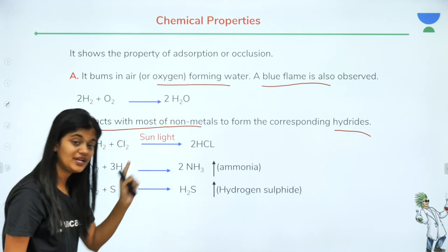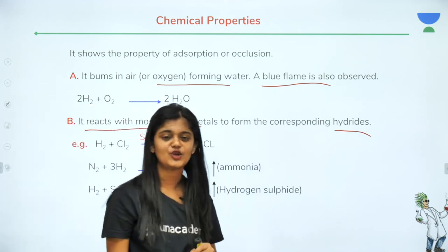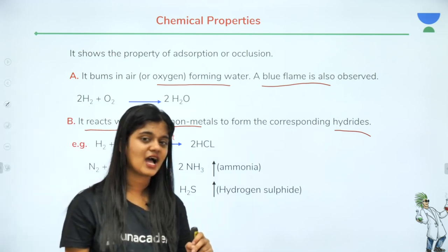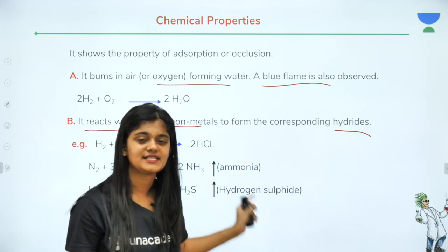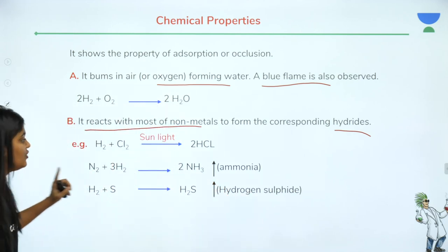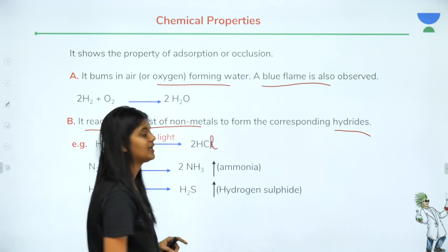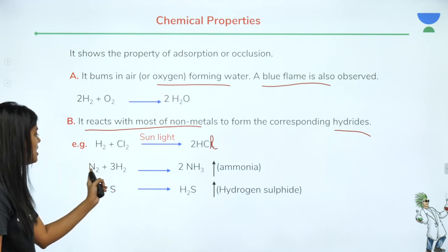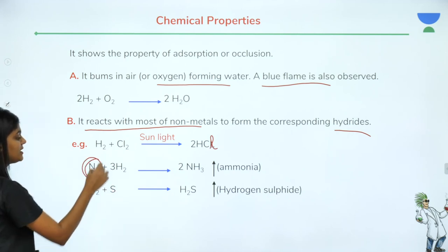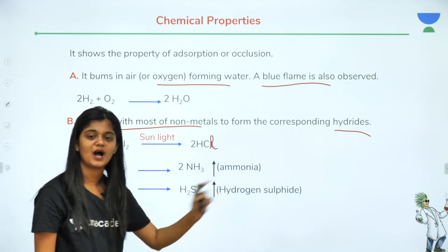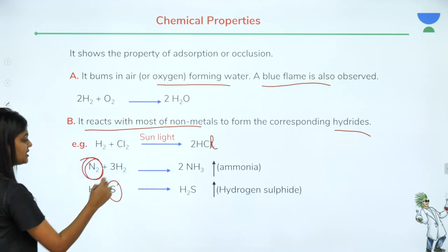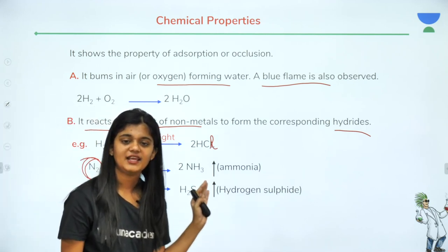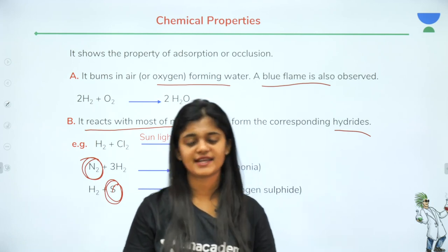If hydrogen reacts with chlorine (a non-metal) in the presence of sunlight as a promoter, it forms 2HCl — hydrochloric acid. Another example: hydrogen with nitrogen gives ammonia (NH3). Similarly, hydrogen with sulfur gives hydrogen sulfide (H2S). These are the reactivities of hydrogen with non-metals.